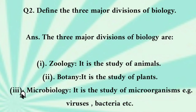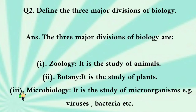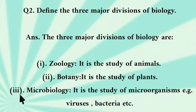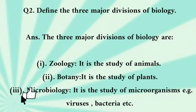Hayatiyat ki teem bade hisson ki wazahat karein. Hayatiyat ki teem bade hisse hain: Zoology — ye janwaron ka mutala hai. Nabatiyat — ye paudun ka mutala hai. Microbiology — ye microorganisms ka mutala hai, jaysay virus, bacteria, wagirah.